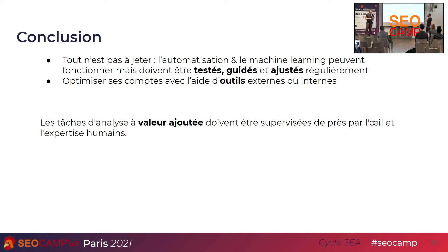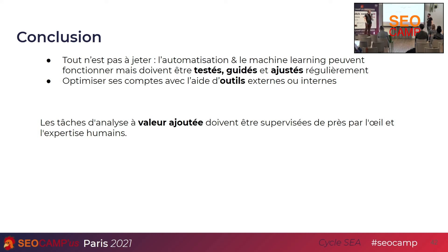On peut s'aider avec des outils externes — j'ai mentionné Data Studio, mais on en utilise plein d'autres. Google Sheet nous aide à automatiser pas mal de choses, on utilise Ads Editor pour pousser énormément de contenu en même temps. L'objectif de notre approche, c'est que toutes les tâches à valeur ajoutée doivent être effectuées ou au moins supervisées, contrôlées par un humain. On ne peut pas juste faire confiance à la machine — le robot va appliquer une méthode qui lui a été assignée sans contextualiser.